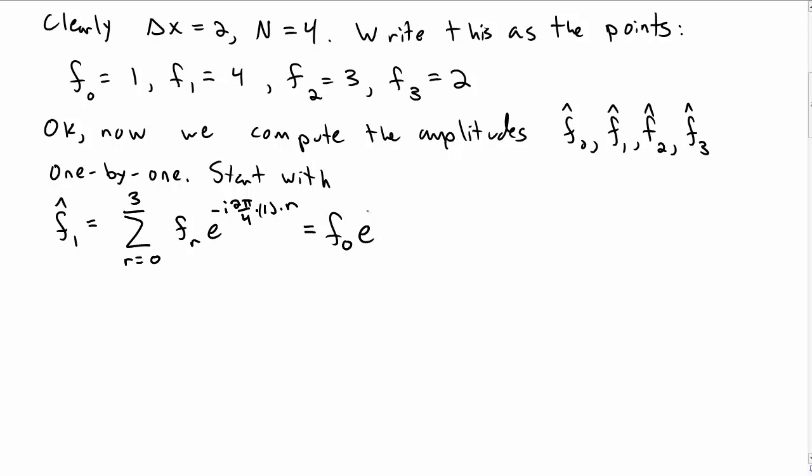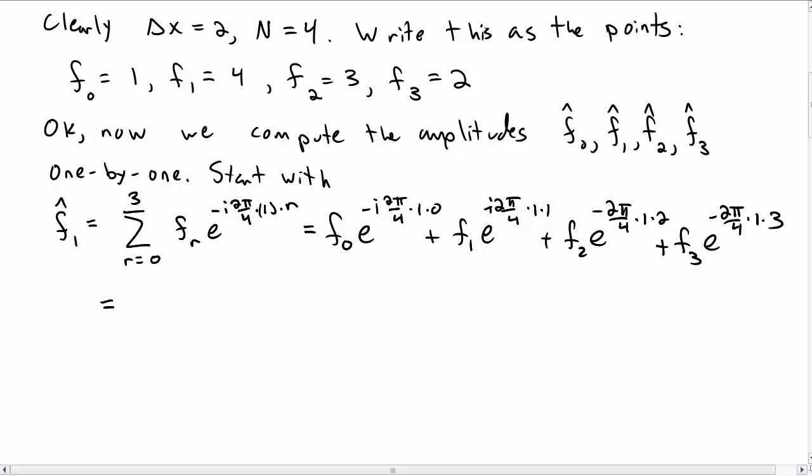So that is 4 terms: an f0 term putting in r equal to 0, an f1 term putting r equal to 1, same thing for f2 with r equal to 2, and f3 where we put r equal to 3. We can compute these out, so we get 1 minus 4i minus 3 plus 2i, or minus 2 minus 2i. So we've learned that f1 hat is minus 2 minus 2i.